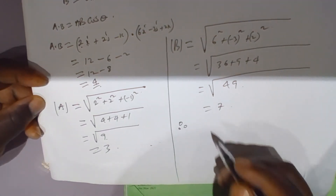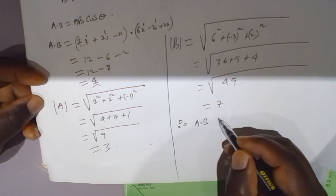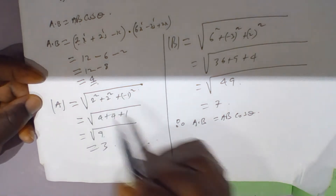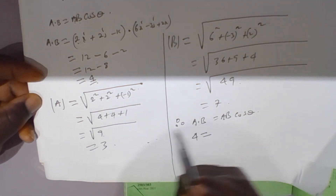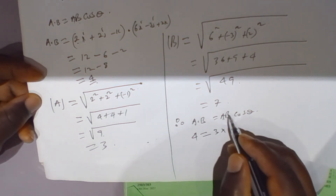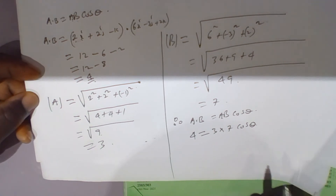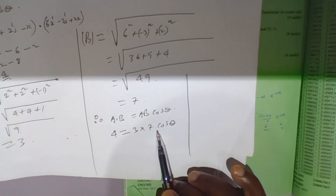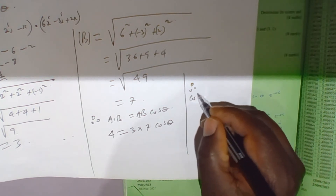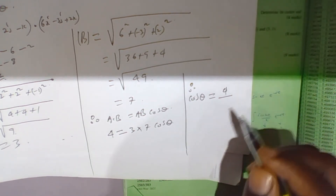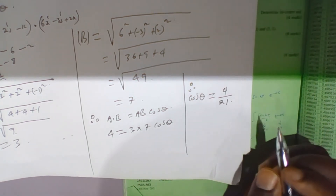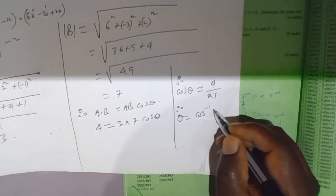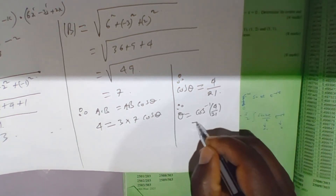Therefore, a dot b equals |a||b| cos theta. Since a dot b is 4, we have 4 equals 3 times 7 times cos theta. Dividing both sides by 21, cos theta equals 4 over 21. Therefore theta equals cos inverse of 4 over 21.